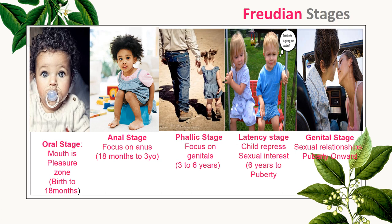The phallic stage focused on the genitals. This is where the development of the daddy's girl or mama's boy phase comes in. The latency stage was where children repressed their sexual interest, from six years old to puberty — this is the phase of cooties, where boys or girls have cooties. The last stage was the genital stage — sexual relationships — from puberty onward into adulthood, where you want intimate relationships and are expressing your sexuality.